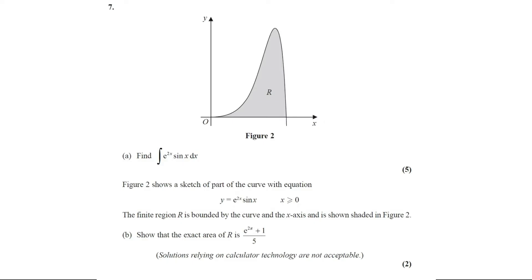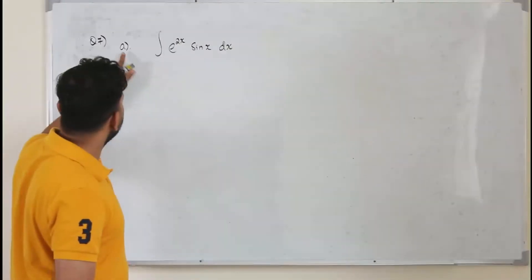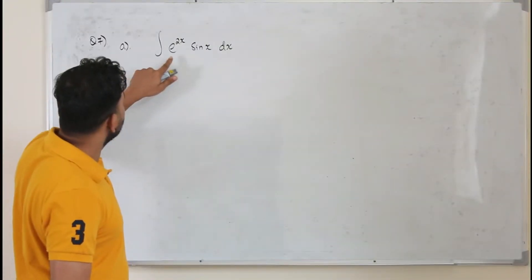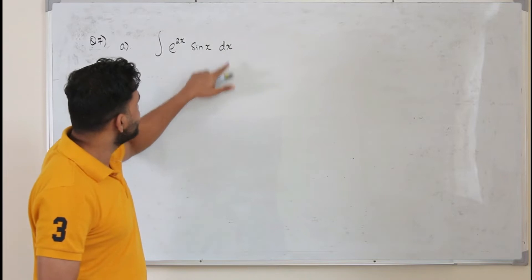Question number 7, Part A. Find the integral of e to the power 2x sin x dx. This question carries 5 marks. Here in Part A, they want you to integrate e to the power 2x sin x dx.